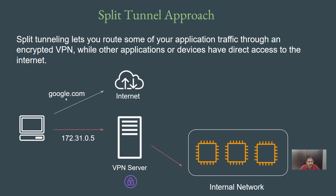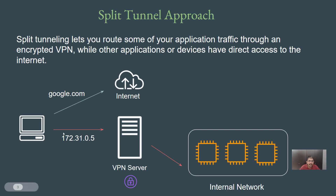In the split tunneling approach, all traffic towards the internal network of your organization goes through the VPN server, and all other traffic goes directly through the internet. We do not want everything going towards the corporate VPN server, and the feature that allows this is what we refer to as split tunnel.